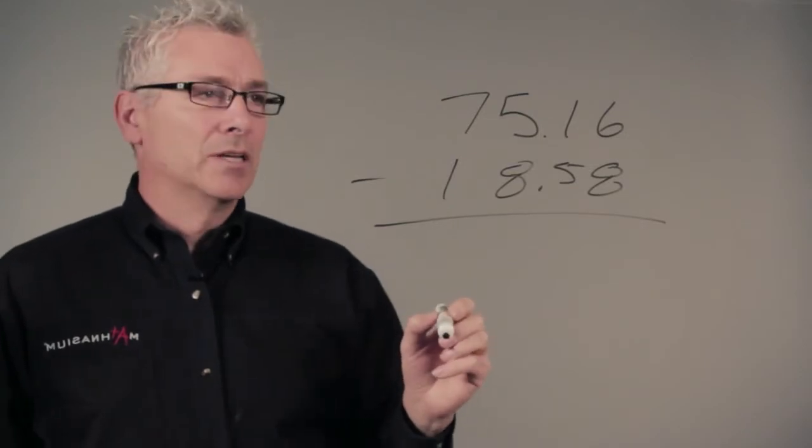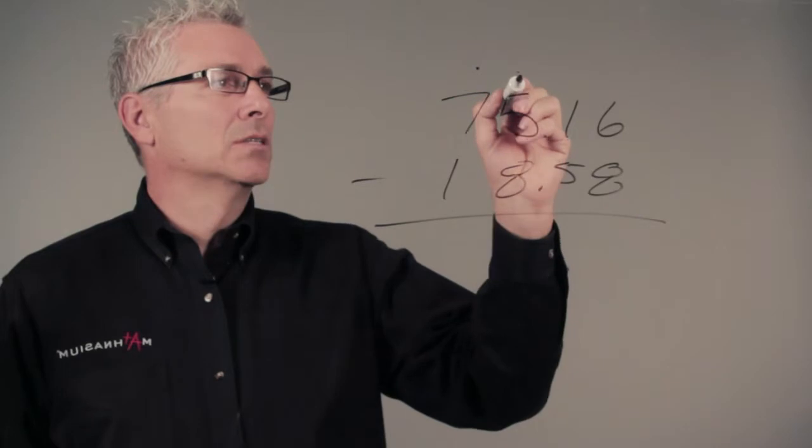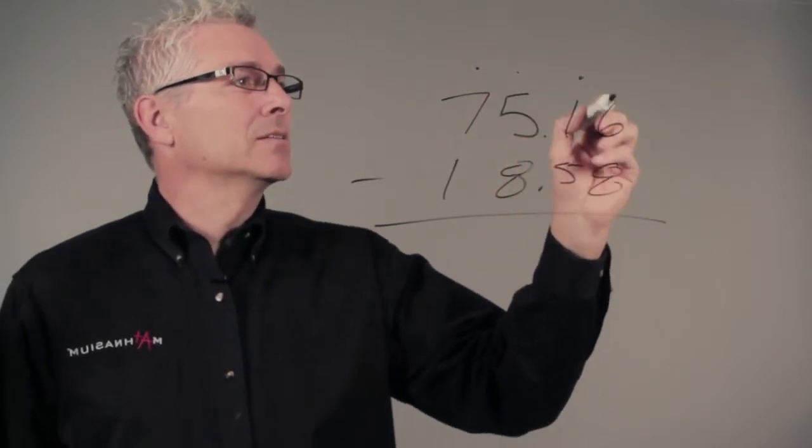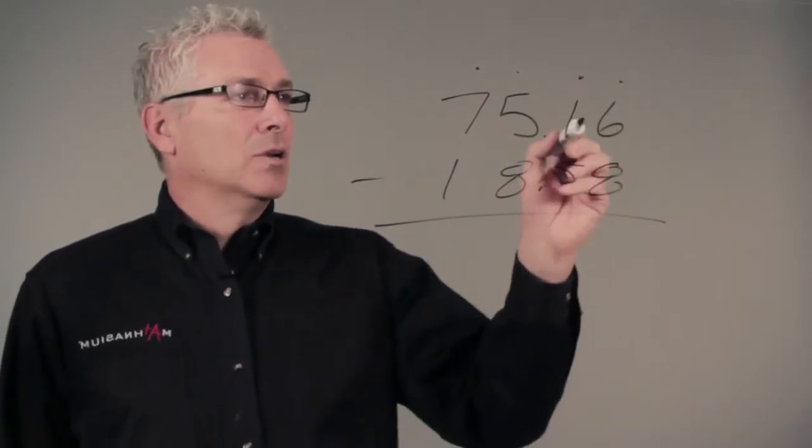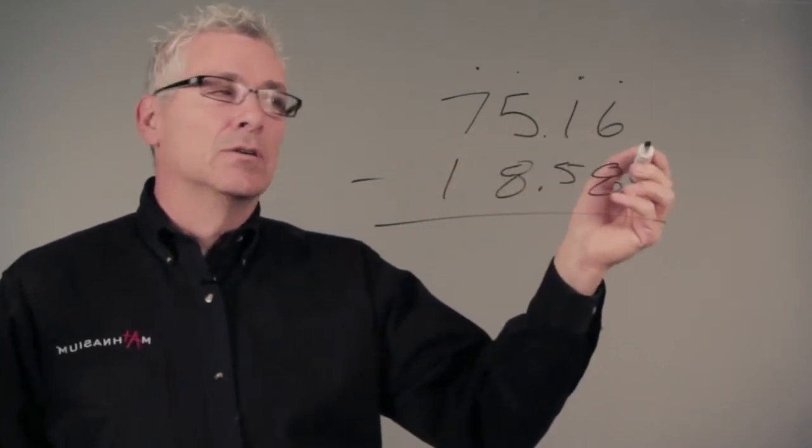Well, first of all, we've got to remember about our place value. Here we have tens, here we have ones, here we have tenths, and here we have hundredths. And each one of these is worth ten times more than the one to its left.